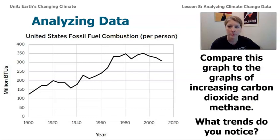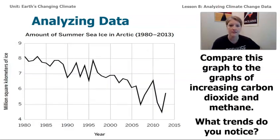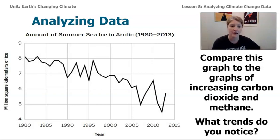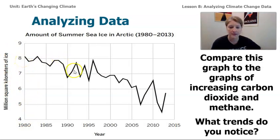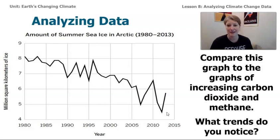Let's see a more global graph. This global graph is about all of the ice in the Arctic — more than just the United States; there are other countries in the Arctic Ocean. We can see the sea ice in million square kilometers starting about 1980, and there has been a decrease in the amount of sea ice since about 1980. So this is showing that while carbon dioxide and methane are increasing in our atmosphere, the amount of sea ice on Earth is going down.